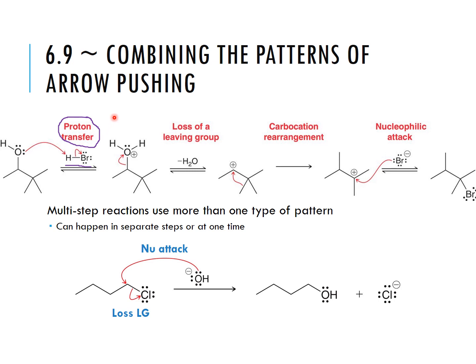The second arrow is the bond breaking between the hydrogen and the bromine. With proton transfers we normally need two arrows because we are transferring that proton — it has to break the bond from its old atom and form the bond to the new atom. The second step is the loss of a leaving group, which requires one arrow. This arrow shows the bond breaking between that carbon and the oxygen.